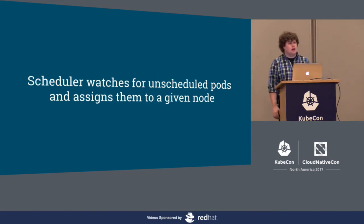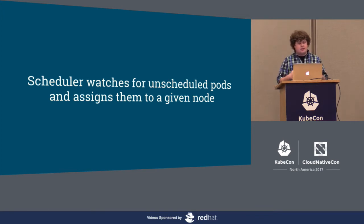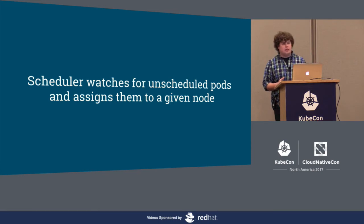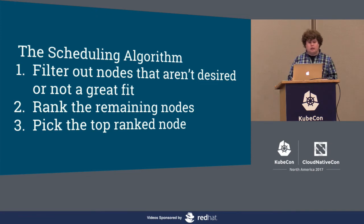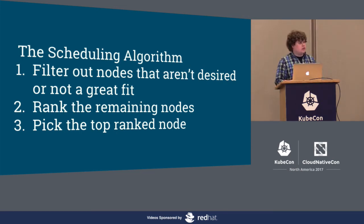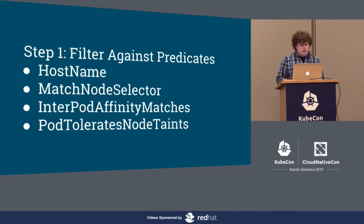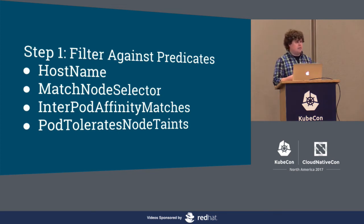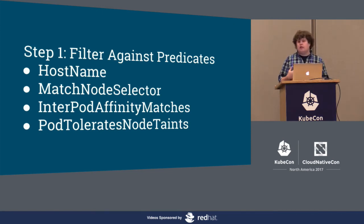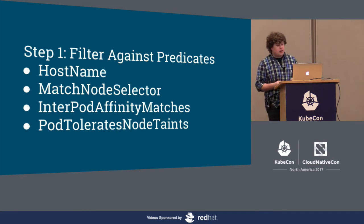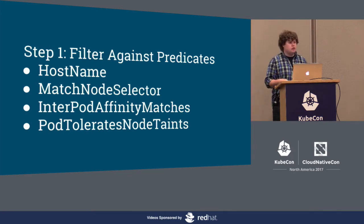The scheduler watches for unscheduled pods — specifically pods without a node name — and assigns them to a given node by constantly querying the API server. The scheduler doesn't actually run pods; it only assigns pods to nodes. It does this via a scheduling algorithm: first it filters out nodes that aren't a great fit, then it ranks the remaining nodes and picks the top-ranked one. The simplest scheduling strategy is to specify a node name directly in the pod spec — the hostname predicate checks this and excludes every node that doesn't match.